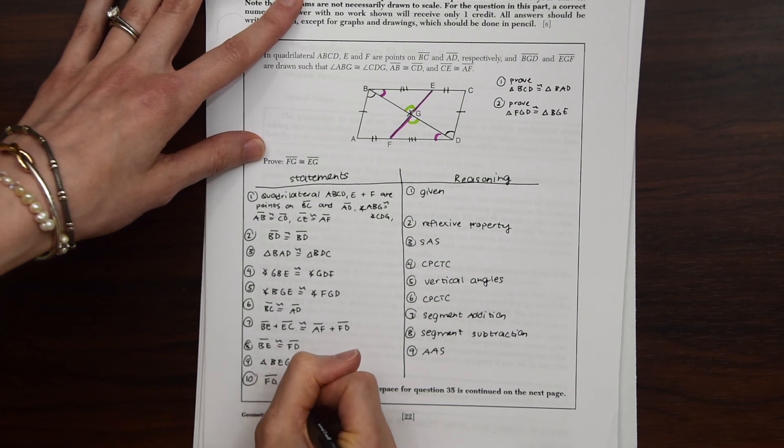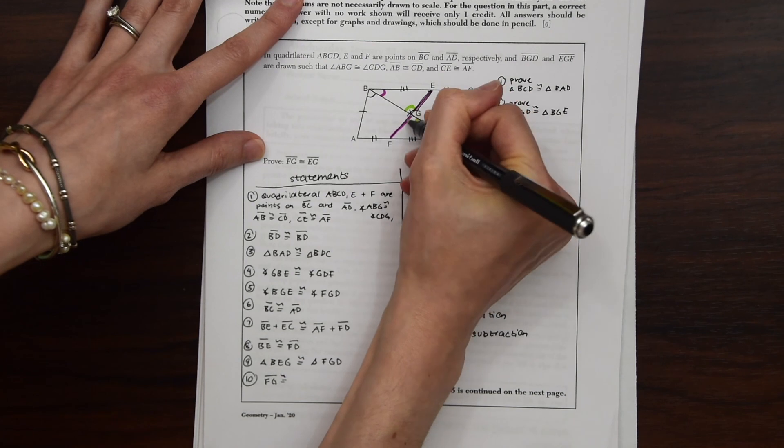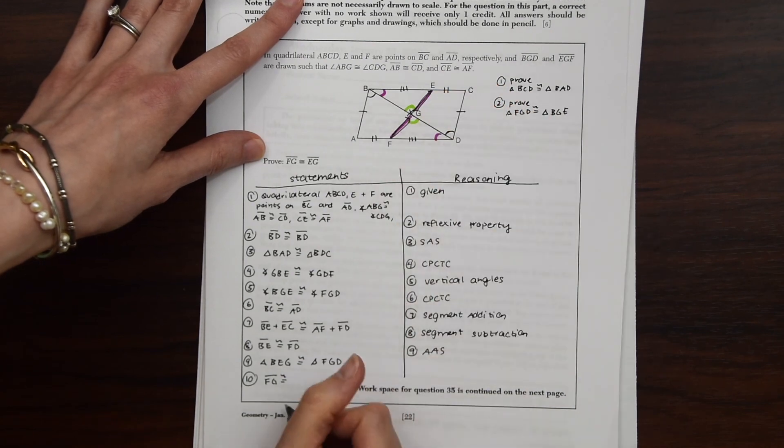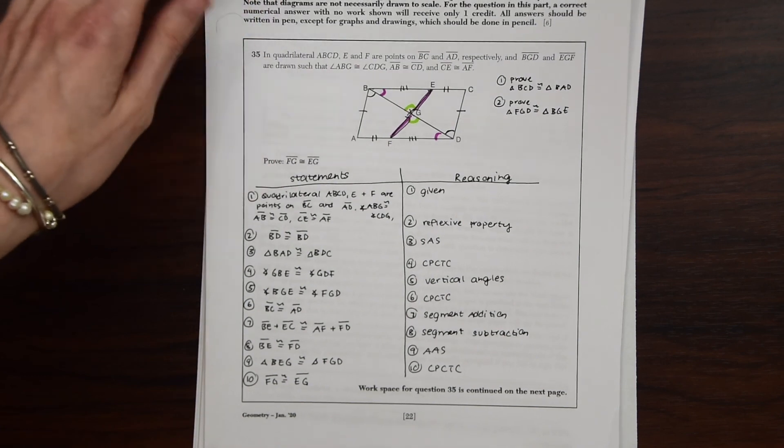FG. Our original highlighted pink sections here. We can finally prove these two congruent. And say that FG is congruent to EG. And this is based on CPCTC. Congruent parts of congruent triangles are congruent.